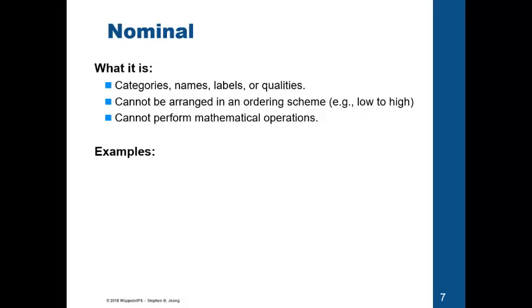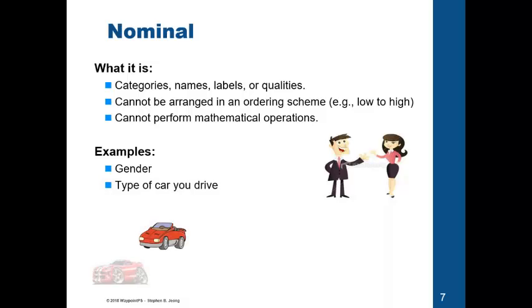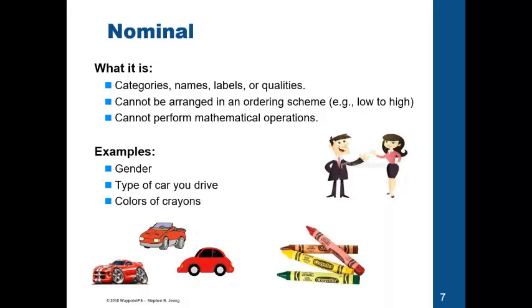Nominal refers to categories, names, labels, and qualities. We cannot arrange them in order from high to low, meaning that we can't say one is better than the other, which also means that we can't perform mathematical operations. Think about gender. We can't say that men are better than women, or women are better than men. Some might, but objectively, we really can't. Type of car you drive also, and colors of crayons. We really can't do any kind of mathematical operations. We can't say that green plus yellow equals red.